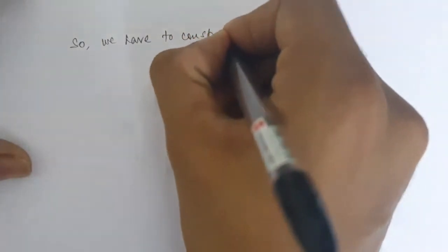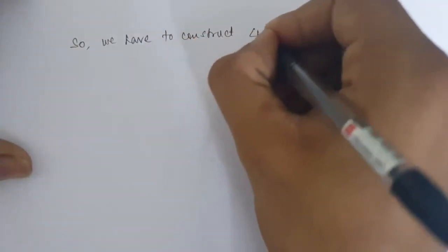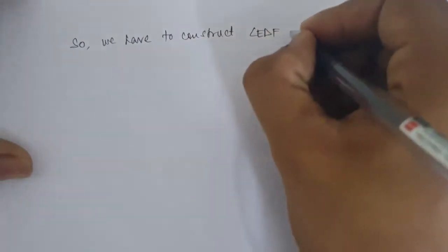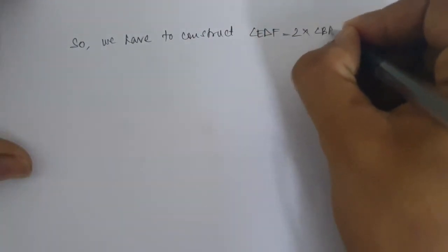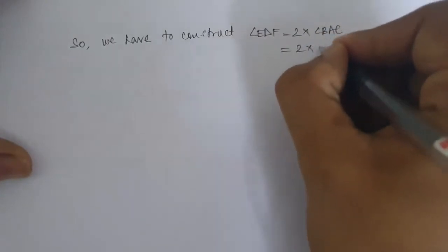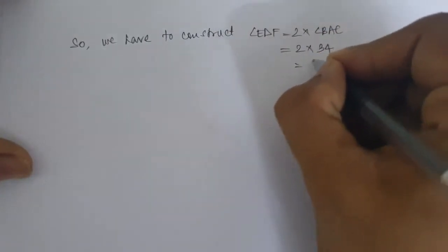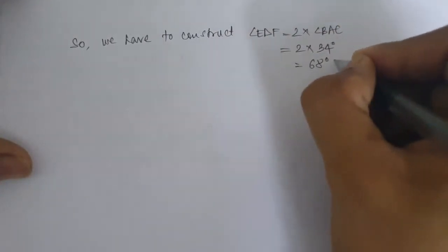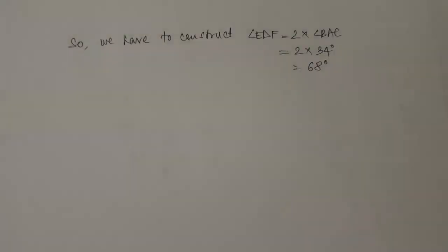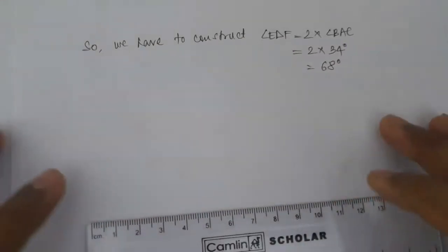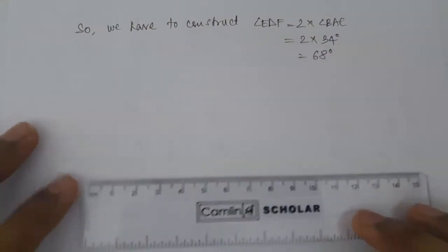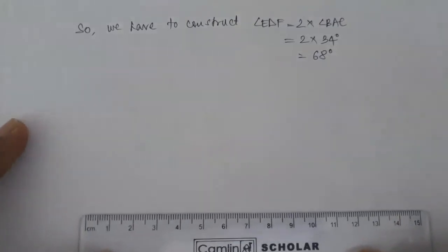So we have to construct angle EDF equal to 2 into angle BAC which is equal to 2 into 34 which is 68 degrees. We have to make an angle now which is 68 degrees. So for that we start by making the base of this angle again which is DF.